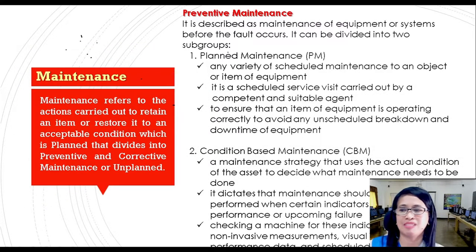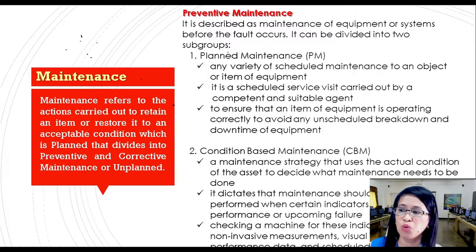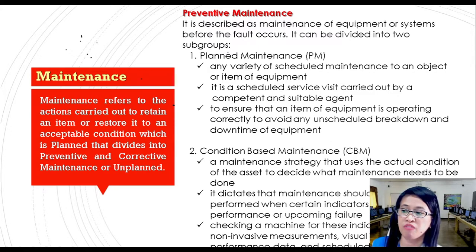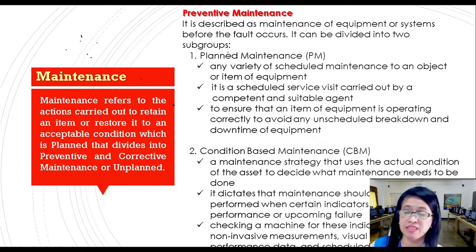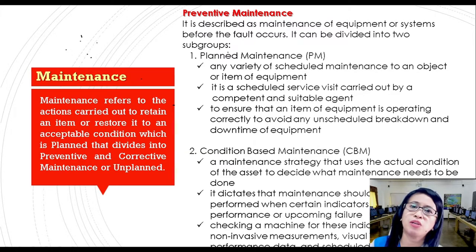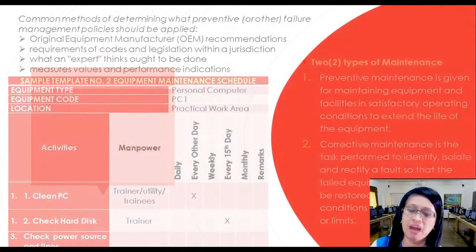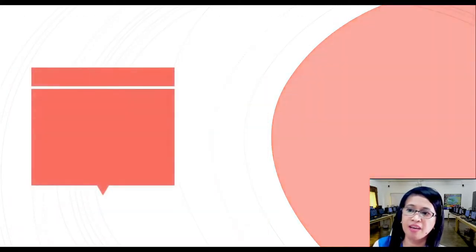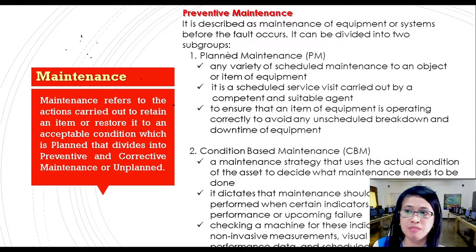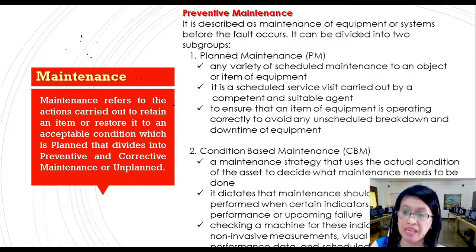When we talk about maintenance, it refers to the actions carried out to retain an item or restore it to an acceptable condition, which is planned — divided into preventive and corrective maintenance — or unplanned. When we talk about preventive maintenance, it is described as maintenance of equipment or systems before the fault occurs. It can be divided into two subgroups: planned maintenance (PM) and condition-based maintenance (CBM).